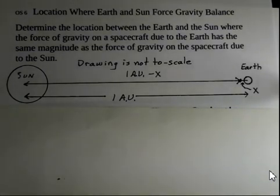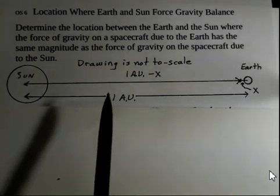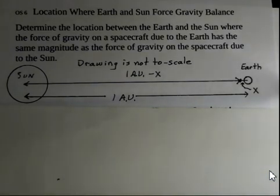And x is the distance from the dot, the spacecraft, to the center of the Earth. 1 minus x, 1AU minus x, is going to be the distance from the spacecraft to the sun, and I am going to use the unit, the 1AU, as the distance unit to simplify powers of 10 in the calculation.